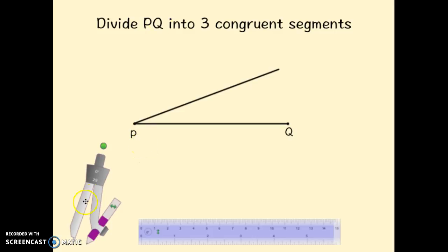Now we want to take our compass. We're going to place it at point P, which is our endpoint we chose before, and then we're going to draw the same number of arcs that we want to divide our segment up into. So we want to divide this into three congruent segments, so I'm going to draw three arcs along this segment that I've made.